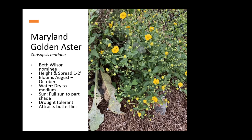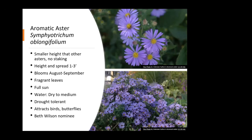Aromatic aster is another great fall bloomer, blooming August through September, stays relatively short at one to three feet. Sometimes these bushes get a little lanky — it might not hurt to prune them mid-summer. They have fragrant leaves, take dry soils, are drought tolerant, and attract birds and butterflies. I also had frost aster volunteering in my waterways, and it was absolutely covered in every kind of pollinator in the fall.